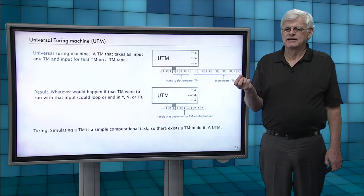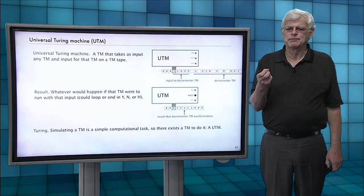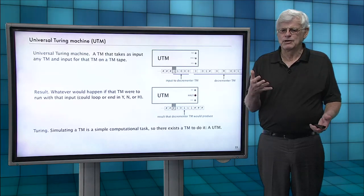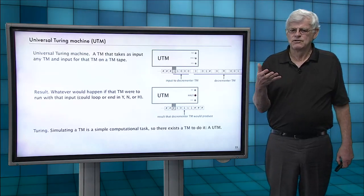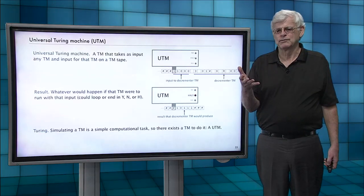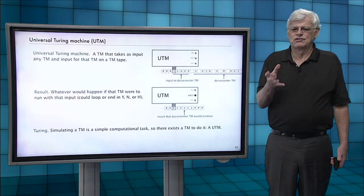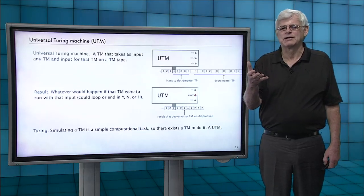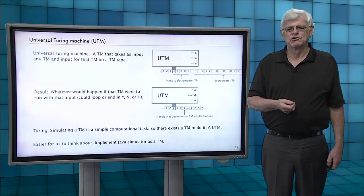Turing figured this out that simply simulating a Turing machine is a simple computational task. You can do it with the basic operations that we have laid out for a Turing machine. So since it's a simple computational task, there's a Turing machine to do it. That's a universal Turing machine.